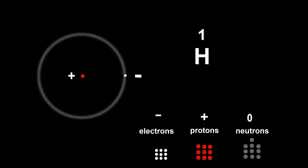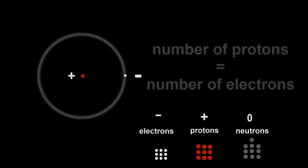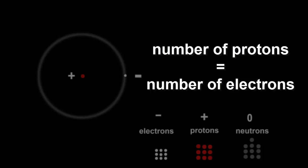The number of protons and electrons must be the same. A hydrogen atom has one proton and one electron. The number of protons equals the number of electrons, and this is true for all atoms.